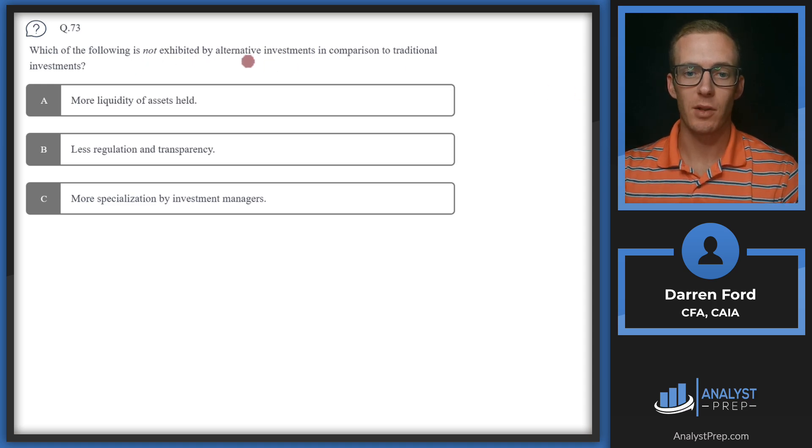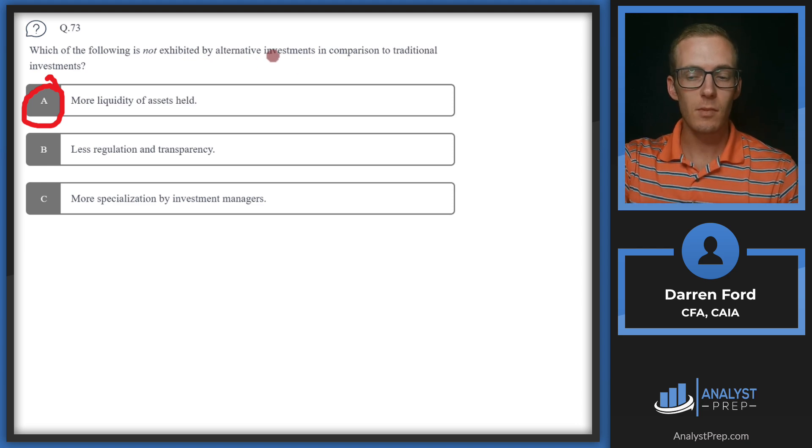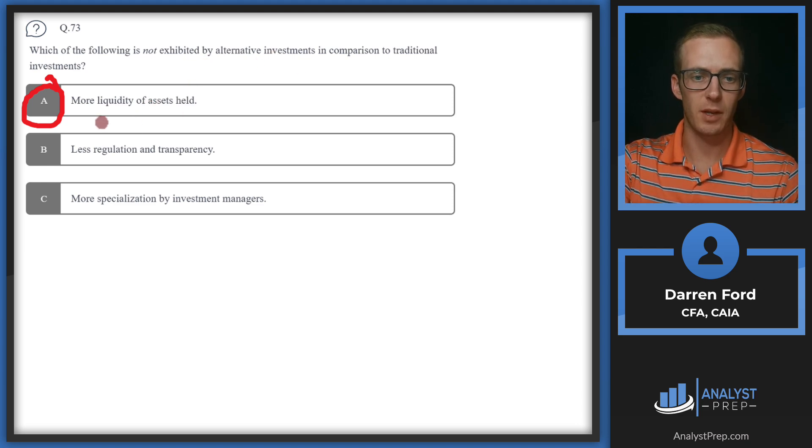Question 73: Which of the following is not exhibited by alternative investments in comparison to traditional investments? Two of these will be statements that differentiate alts from traditional and one will not be. A: More liquidity of assets held. Right away I think we can pick that as our probable answer. Alternatives are generally going to be less liquid than traditional investments.